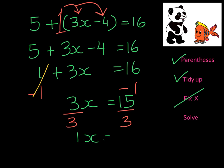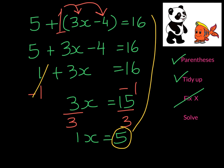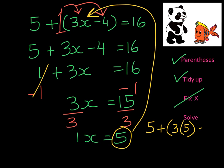At this point we can check — substitute our solution into the original equation carefully. So we will take 5 and add it to 3 times our solution which is 5, and subtract 4 from it first. That will give me 11 which I add to 5, and I see it gives me 16. So we've solved it correctly.